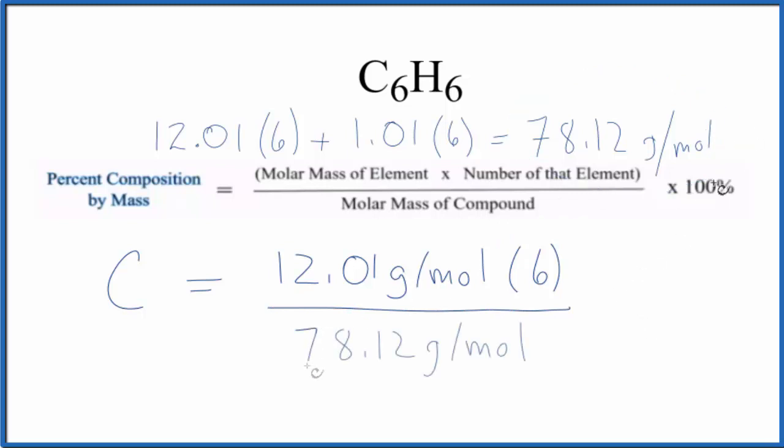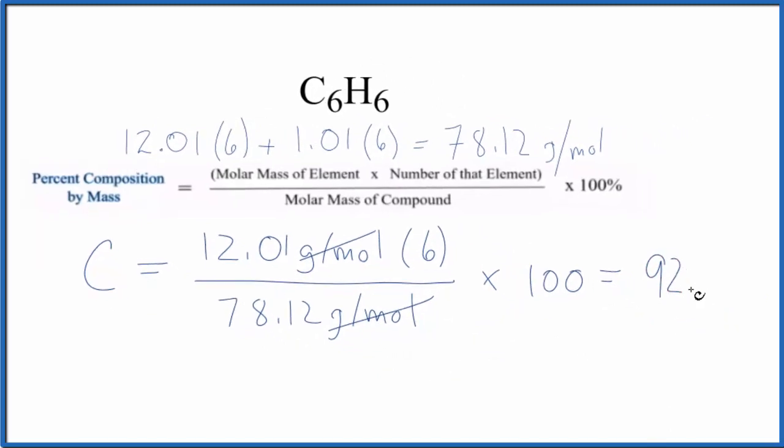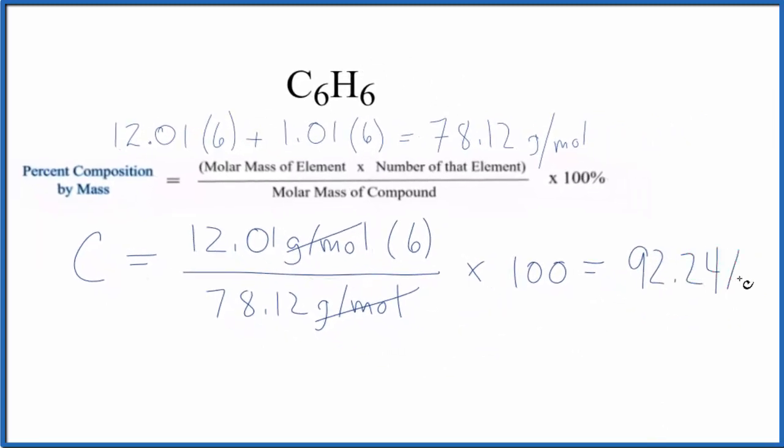Multiply by a hundred to get a percent, and you'll notice that grams per mole we have on the top and the bottom, that cancels out, and we end up with 92.24 percent for the carbon in the C6H6 molecule, in the benzene.